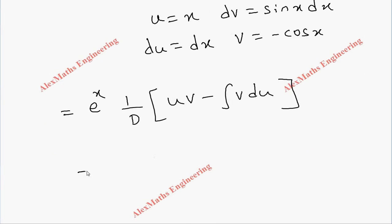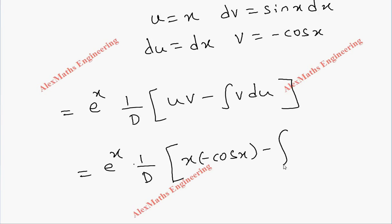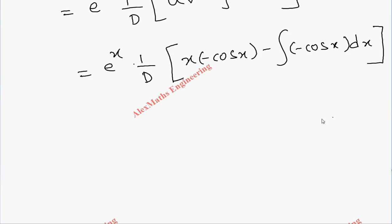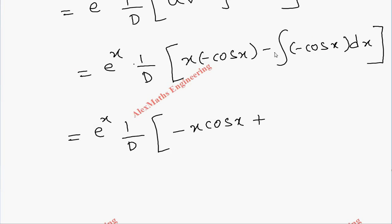Substituting into the formula, inside the (1/D) operator we get: x·(-cos x) minus the integral of (-cos x)·dx. Rearranging, the first term is -x·cos(x), and the two negatives cancel, so plus the integral of cos(x), which gives +sin(x). So we have (1/D)[-x·cos(x) + sin(x)].